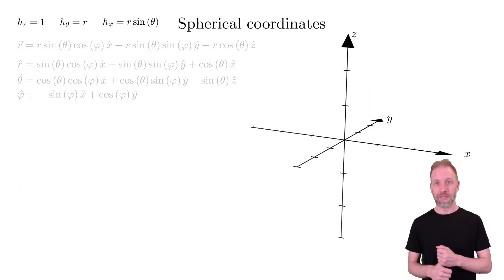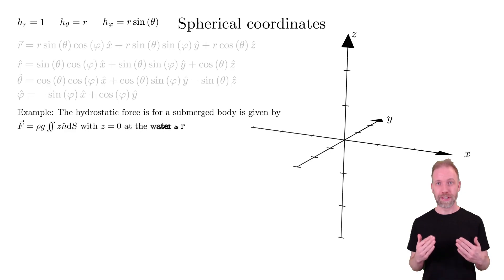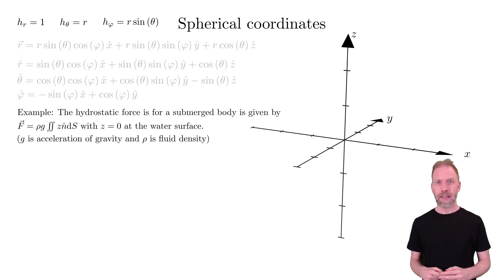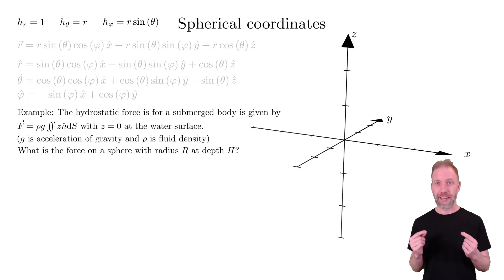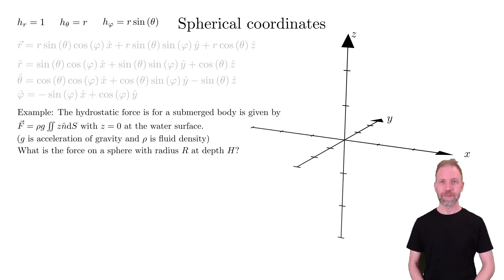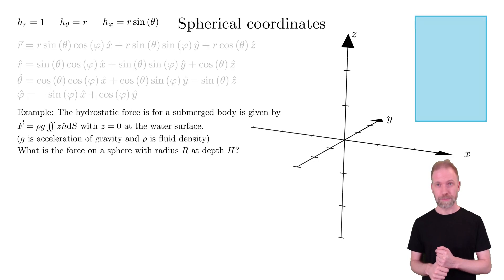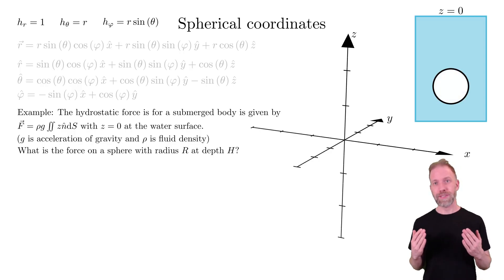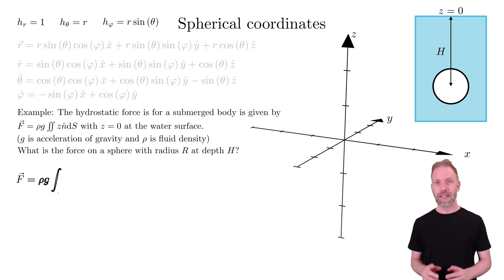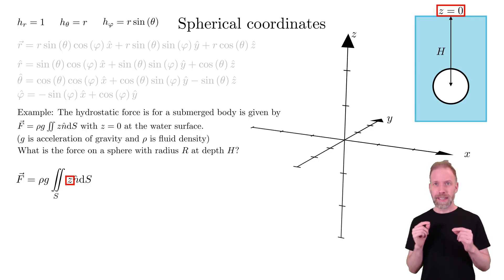Let us do one full example of a surface integral in spherical coordinates, taken from fluid mechanics: solving the pressure integral over a surface to find the force. We are given the surface integral for the force. What is the force on a submerged sphere with radius r at depth h? First, let us show a 2D cross-section of the water, where z equals zero is at the water surface. We can then draw the sphere at depth h.